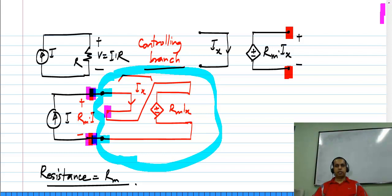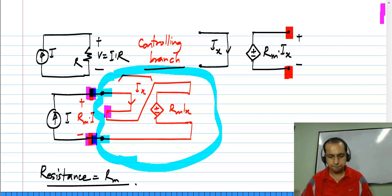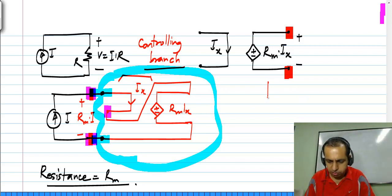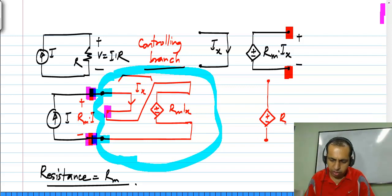This will be useful later when you are able to implement control sources using active elements like transistors — you will be able to realize a variety of functions which may not be physically possible very easily. This schematic looks very complicated; the way I would normally draw it is simply show a controlled voltage source whose value is Rm times Ix, and label Ix here.